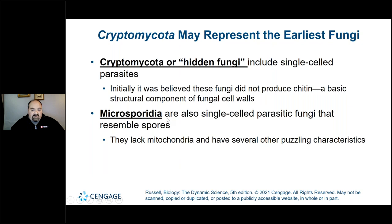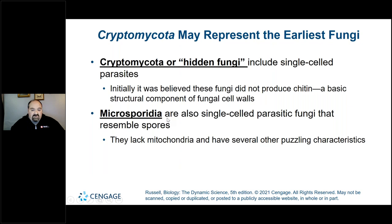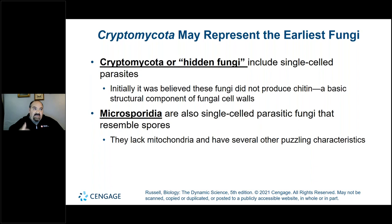Cryptomycota, or hidden fungi, include single-celled parasites. It was initially believed that these fungi didn't produce chitin. Remember, chitin is a polysaccharide — a complex carbohydrate. When you think of chitin, think of fish scales or the exoskeleton of insects, spiders, and shrimp. These exoskeletons are comprised of chitin.